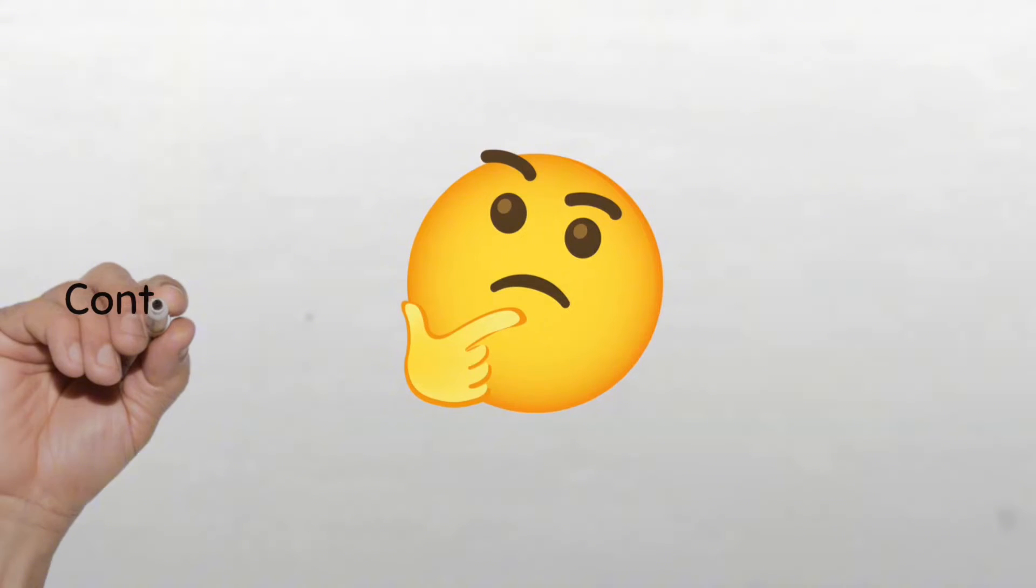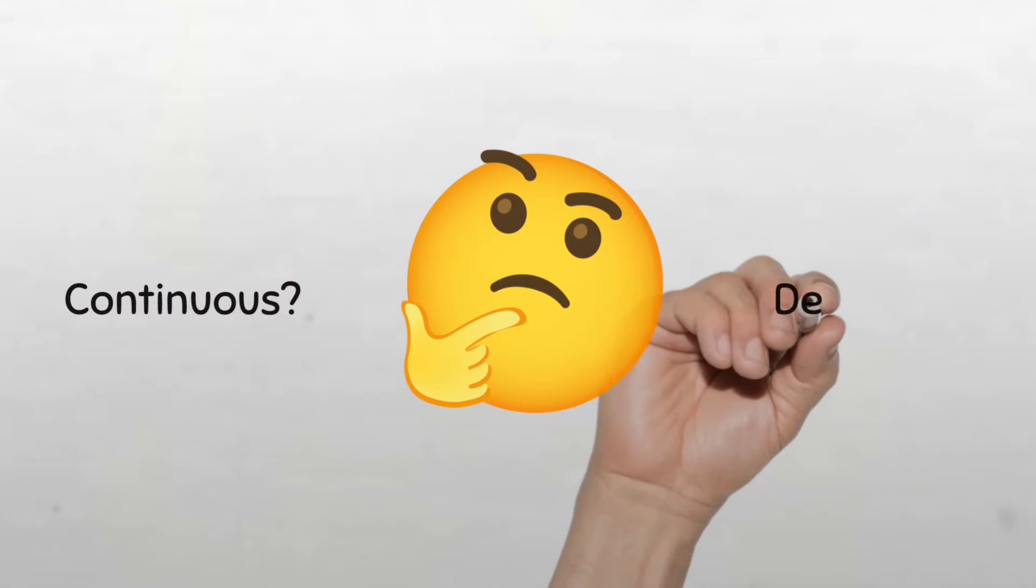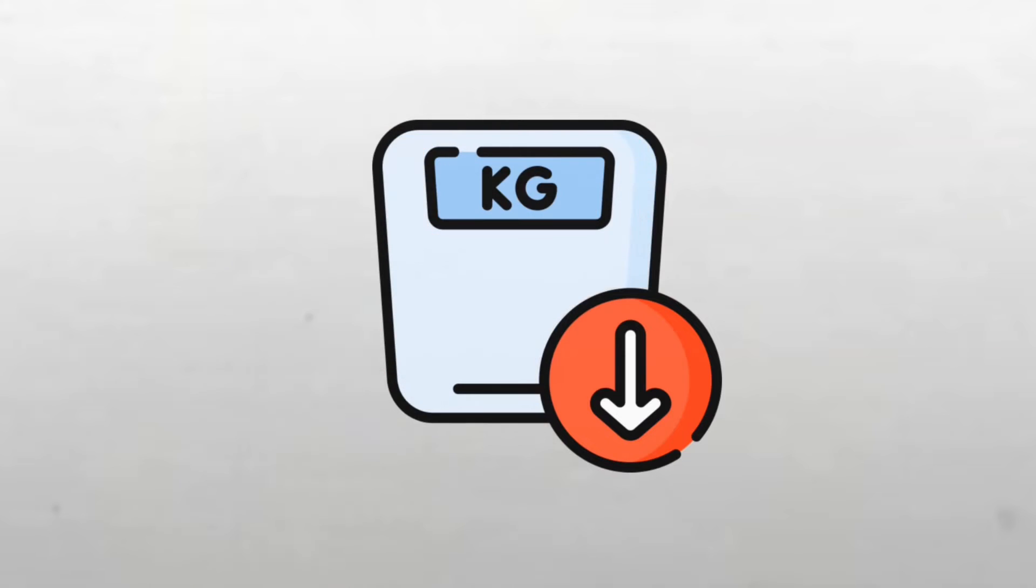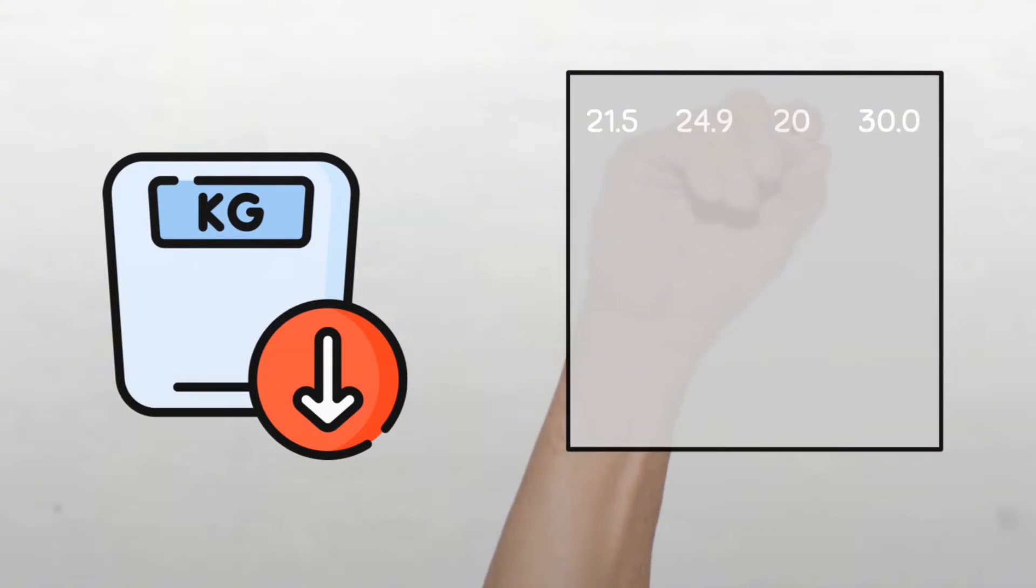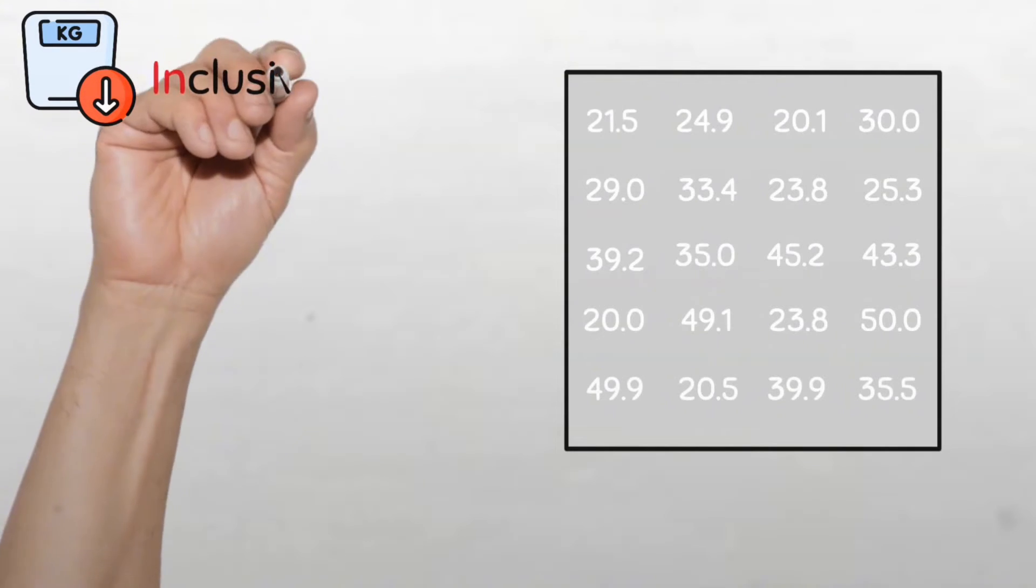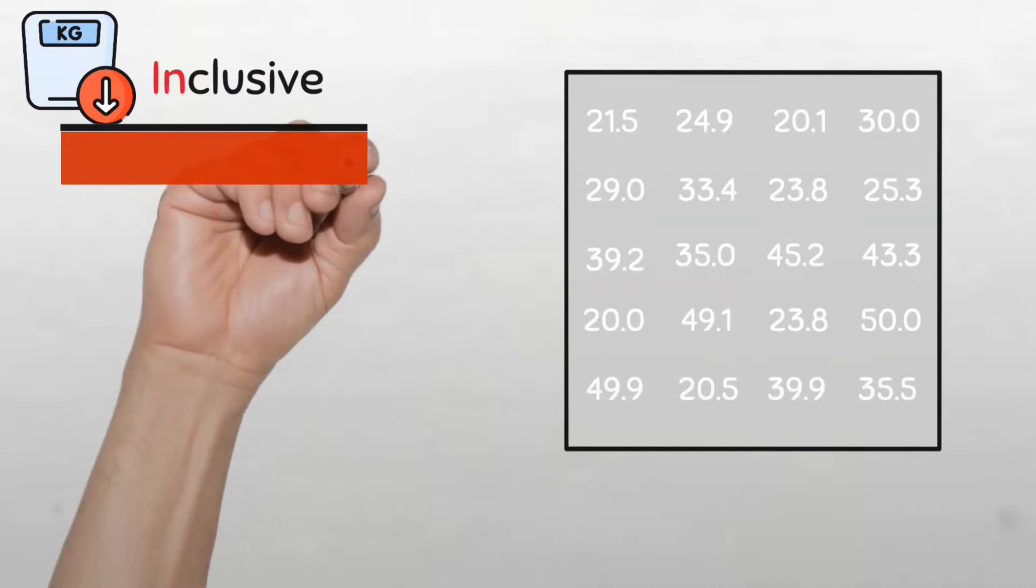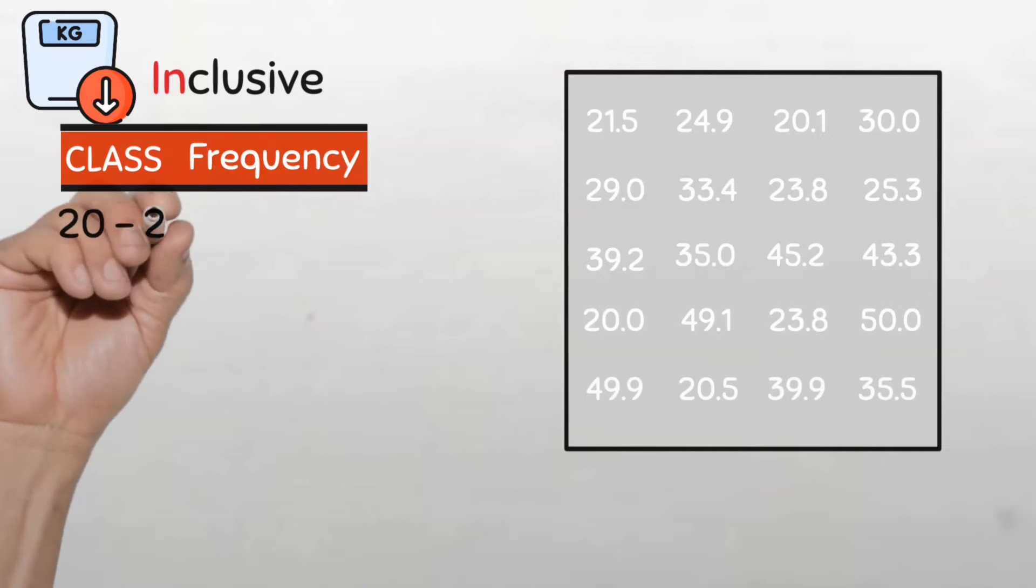But what if our data was of the continuous type? What if our data is having decimal places? Let's look into another data set on the weight of a sample of 20 children who attended an immunization clinic in one day. If we decide to do a group frequency table and use the inclusive type of classes.